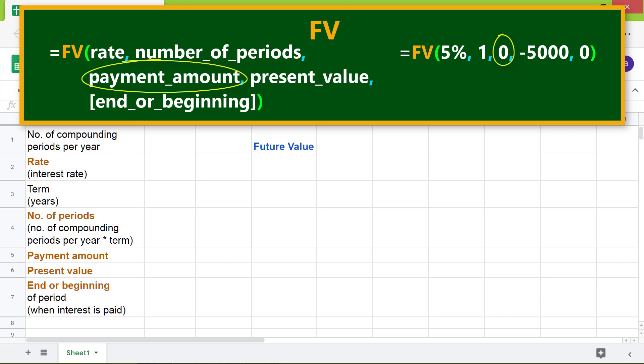Present value is the current value of the investment. It is a negative number because it's the cash outflow. End or beginning is optional. It has a value of zero if the payment is due at the end of each period. It has a value of one if the payment is due at the beginning.